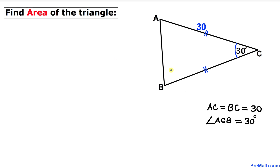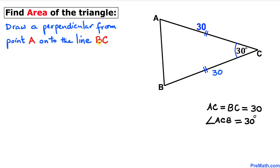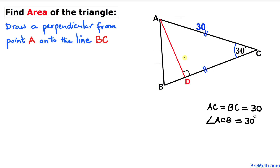Let's go ahead and get started with the solution. Since these two lengths are equal, if AC is 30 units then BC is going to be 30 units as well. Let's go ahead and draw a perpendicular from point A onto line segment BC. I am going to drop a perpendicular, and here's our much nicer looking diagram.